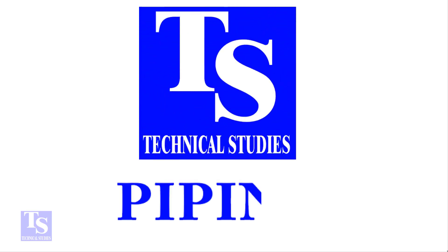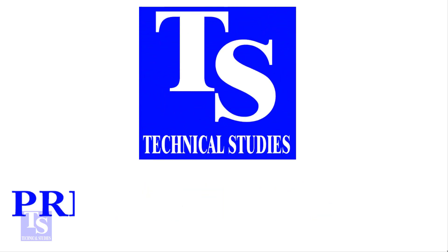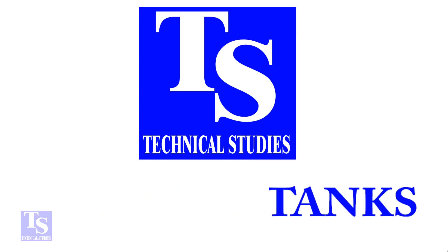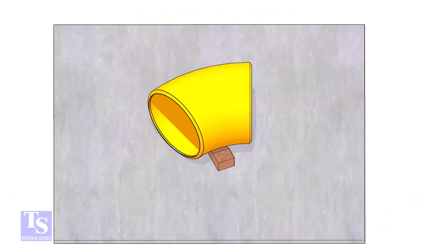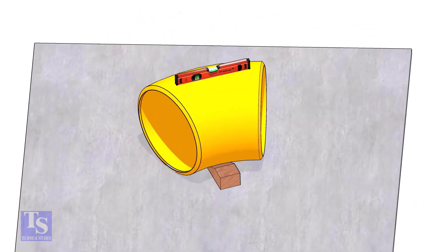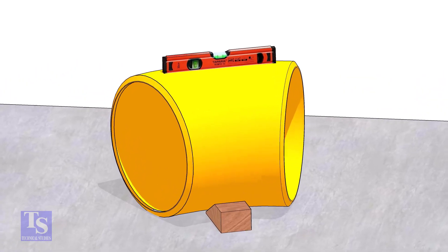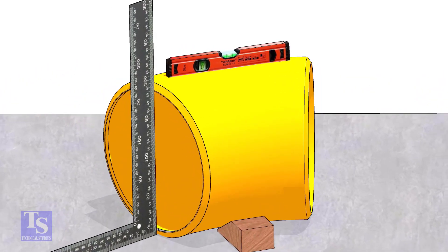Hi friends, welcome to Technical Studies. In this video we will learn how to fit up a 45-degree elbow to another 45-degree elbow. Put one elbow on a straight plate, check the top level, and make the faces of the elbow right angle to the plate.